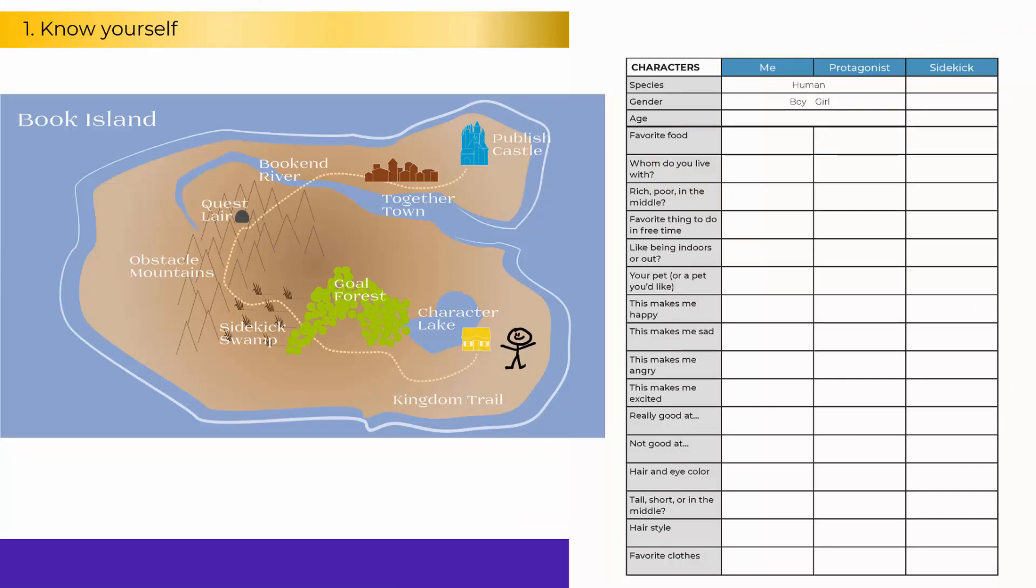So to know yourself, we're here on Book Island. We're at Character Lake. The first thing we're going to do is complete the Me column in the Character worksheet that's in your workbook. So look at the Me column and just fill that out. So circle human and circle boy or girl and write down your age and complete this column. And that's our first step to creating our fantasy adventure book.